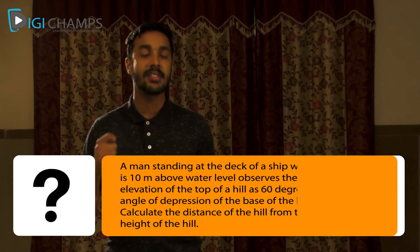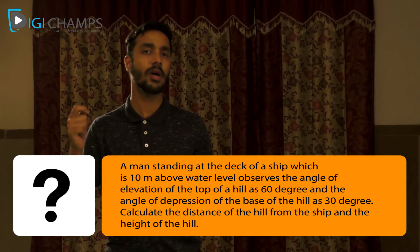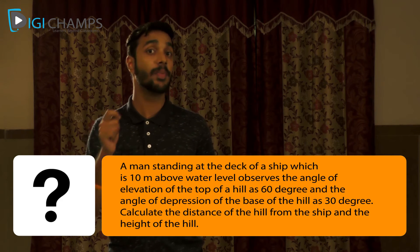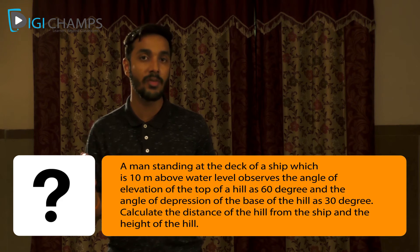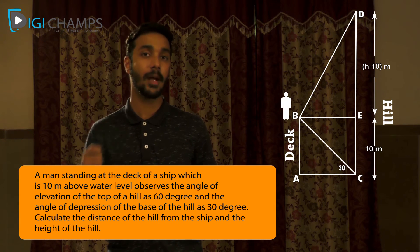Let us look at one more problem. A man standing on the deck of a ship, which is 10 meters above the water level, observes the angle of elevation of the top of a hill to be 60° and the angle of depression of the base of the hill to be 30°. Calculate the distance of the hill from the ship and the height of the hill. The tricky part is the figure — once it's correctly formed, the rest becomes easy.